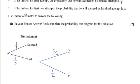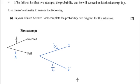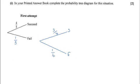If he fails on his second attempt, the probability that he succeeds on his third attempt is P. So we can add another set of branches here. We don't need to consider what happens up here because if he succeeds, he's not going to need another jump.